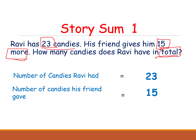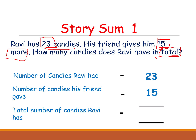Now what are they asking? Total — the total number of candies Ravi has now. So you should do addition. Here this is the tens place and this is the ones place. Always we have to add the ones place digits first.